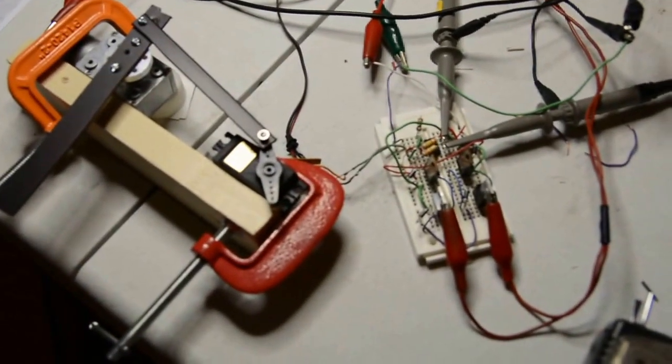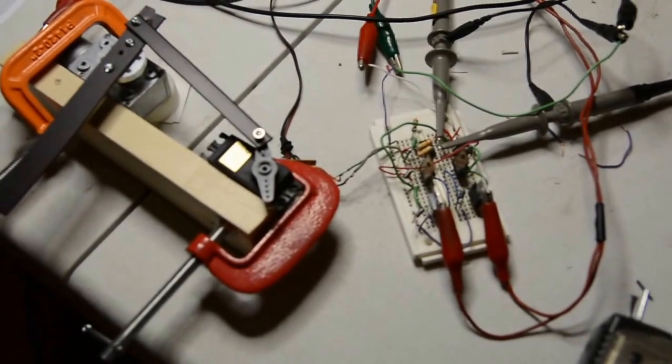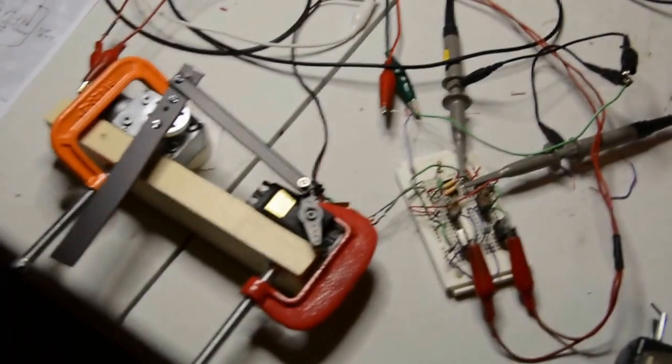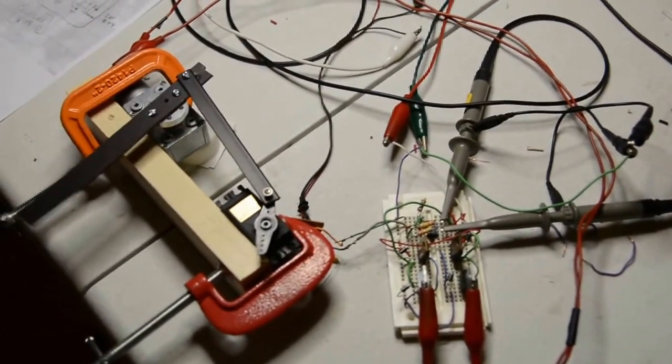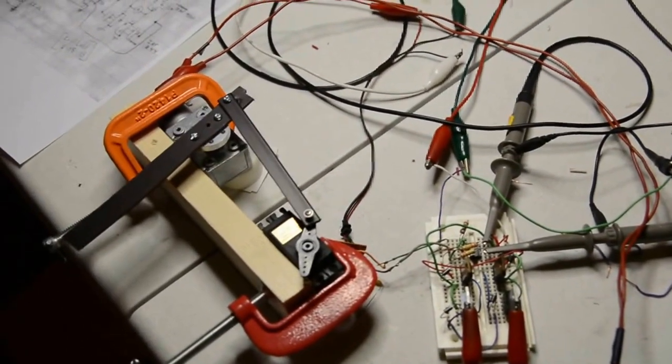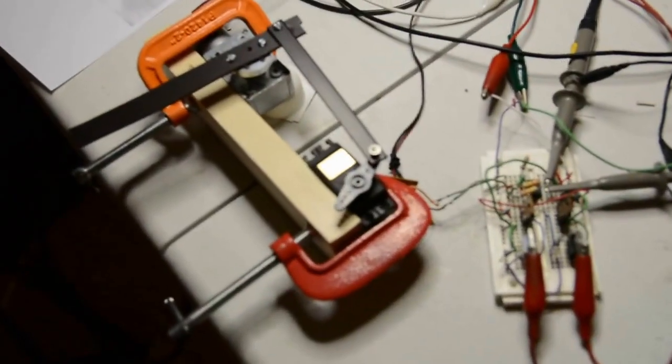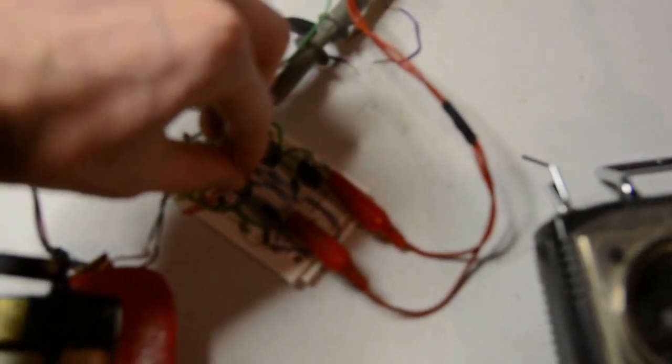The only time they really even get warm is when it's fighting to achieve that perfect position. During the quick motions is actually when it runs the coolest. But when it's attempting to reach equilibrium that's when it gets warm. So you definitely want to try to put heat sinks on there when you're building this yourself.